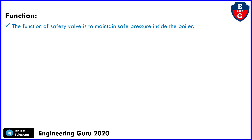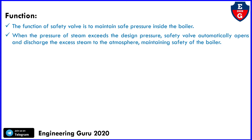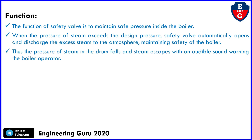Now the function of safety valves: the function of a safety valve is to maintain safe pressure inside the boiler when the pressure of steam exceeds the design pressure. The safety valve automatically opens and discharges the excess steam to the atmosphere, maintaining the safety of the boiler. As the pressure of steam in the drum falls, the steam escapes with an audible sound, warning the boiler operator.